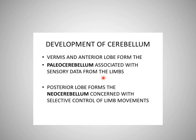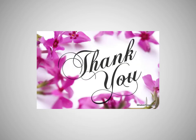The vermis and anterior lobe form the paleocerebellum, which is associated with sensory data from the limbs. The posterior lobe forms the neocerebellum, concerned with selective control of limb movements. This concludes the development of the brainstem, covering the myelencephalon and metencephalon. The development of the mesencephalon will continue in the next lecture.